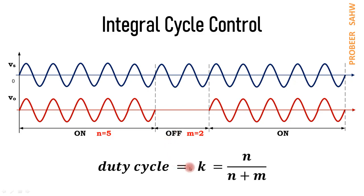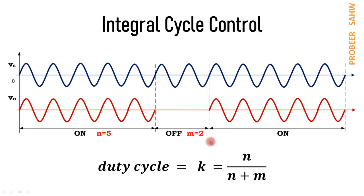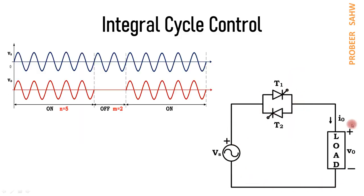We define duty cycle K as the ratio of total on-time to the total output cycle time. The output cycle comprises 5 plus 2, that is 7 cycles, and output is on for 5 cycles, so the duty cycle for this example is 5/7. In general, duty cycle K equals N divided by (N + M), where N is the number of cycles for which the load is connected and M is the number of cycles for which it is disconnected.